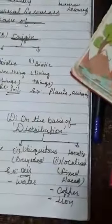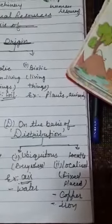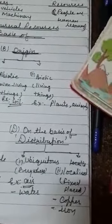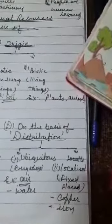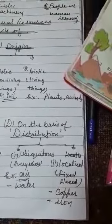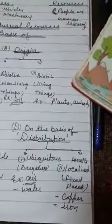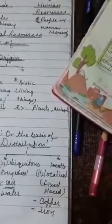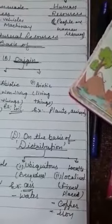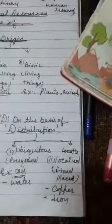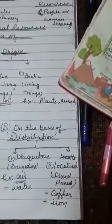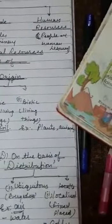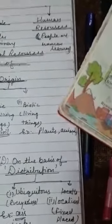Now, fourth category: on the basis of distribution. Distribution means baantna — this word shows the distribution, baantna kisi chiz ko. There are two categories: ubiquitous and localized. Ubiquitous means these are found everywhere — har jage milti hain. Aap India mein rahe hain, bahar rahe hain, kahi bhi rahe hain, kisi bhi country mein rahe hain — aapko milegi air. Aapko milega water. Toh ubiquitous means everywhere — these resources are found everywhere.